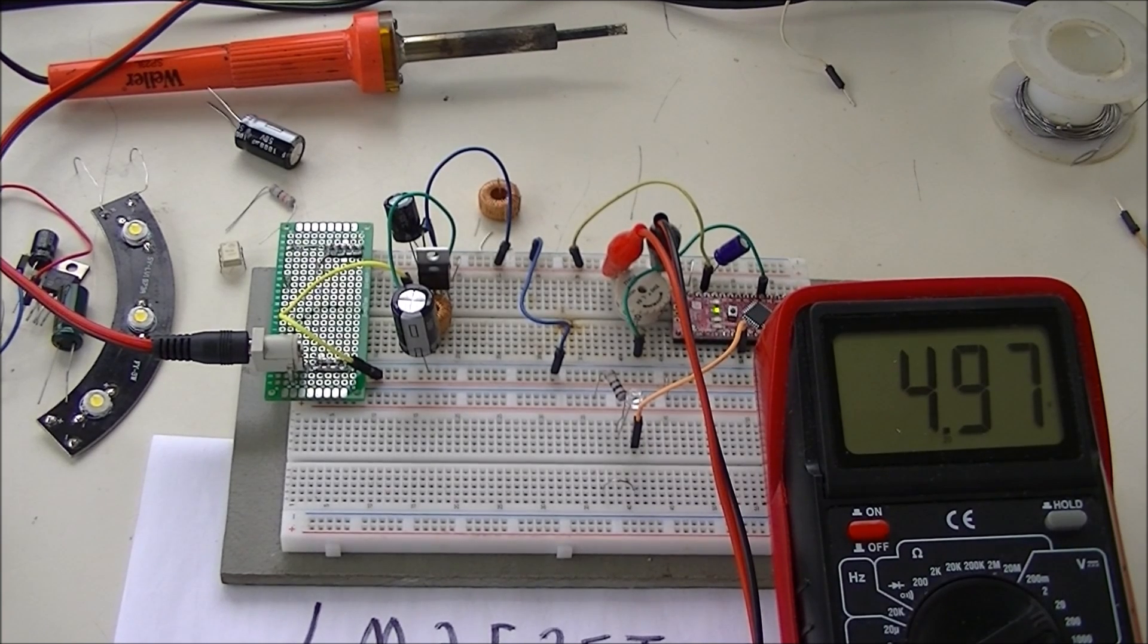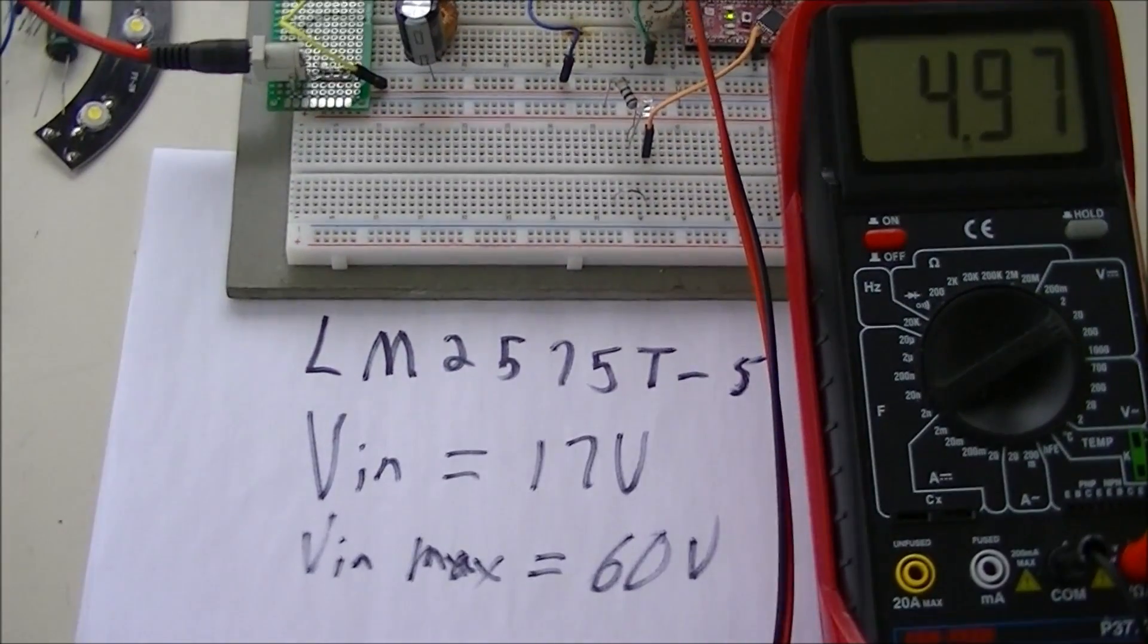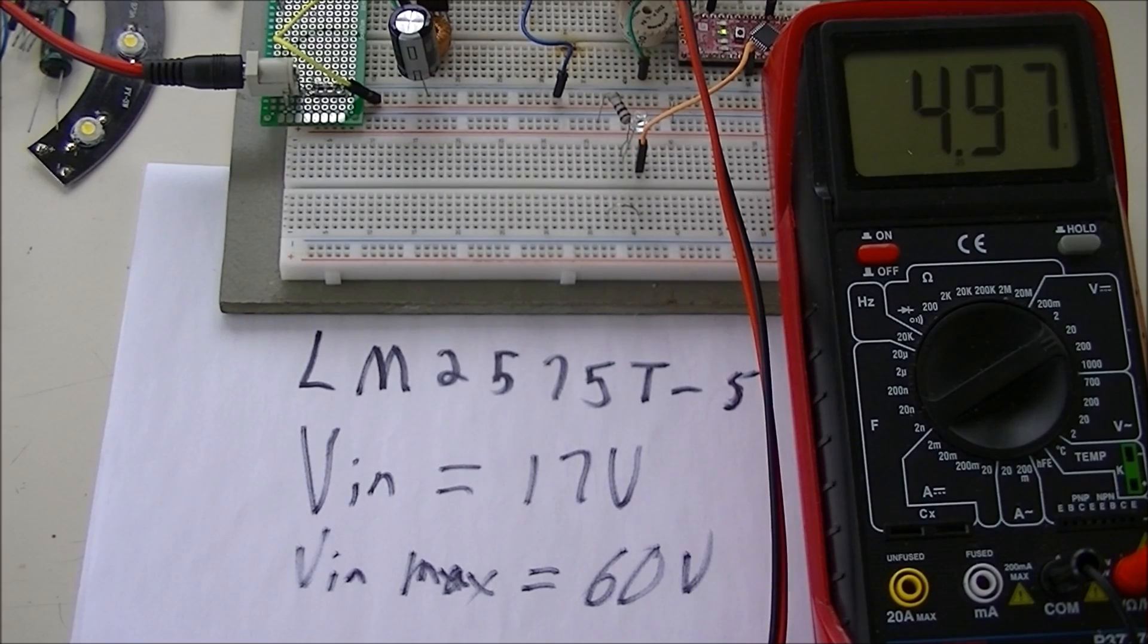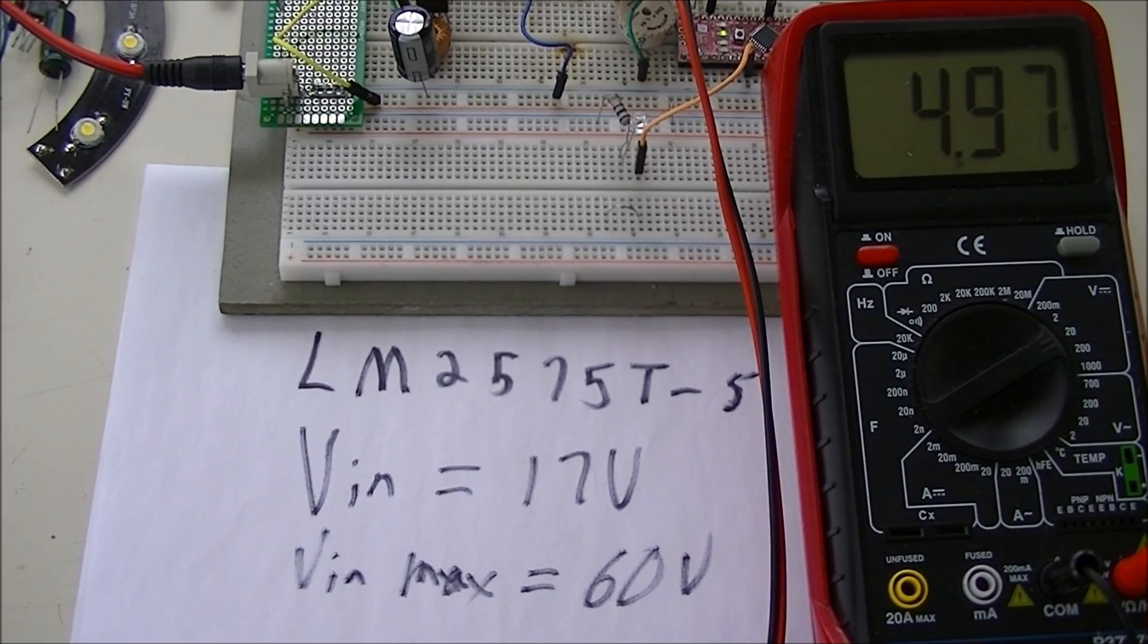All right, here's a demonstration of another switching regulator. Let's move down a little bit. It's an LM2575T-5, a 5-volt output switching regulator.